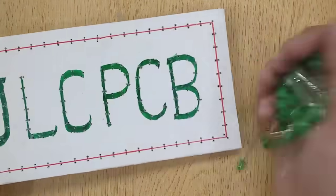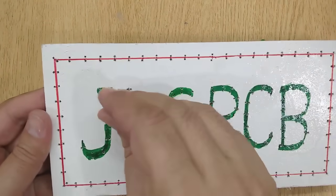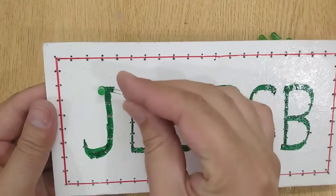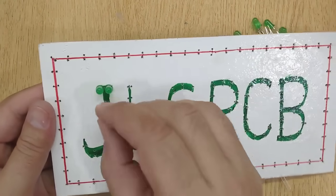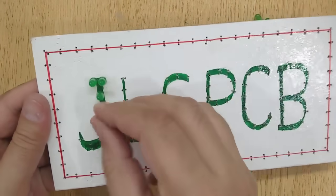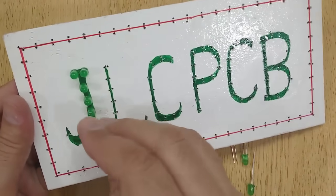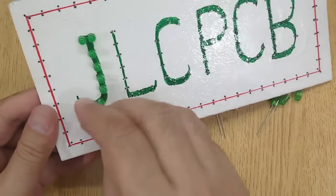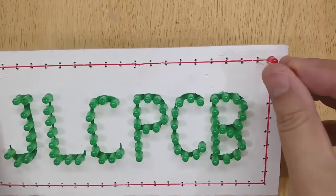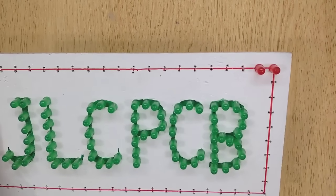Now insert LEDs into the holes one by one to complete your desired text, and also insert LEDs into the holes on the border line.